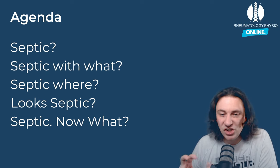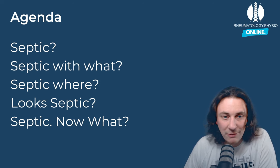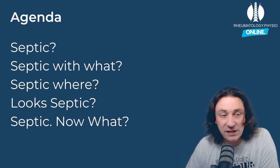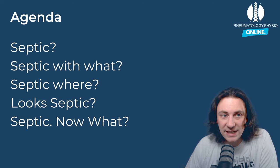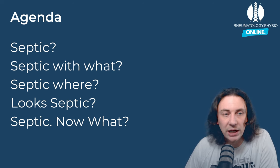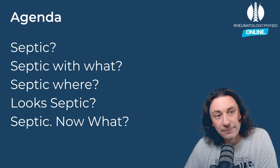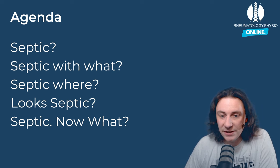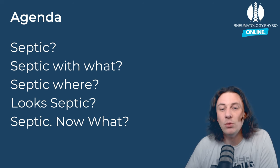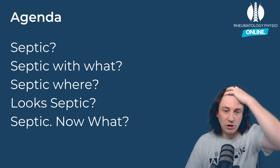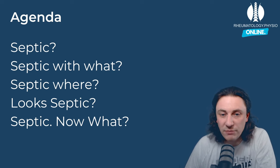So our agenda — we're going to talk about: what is septic arthritis; what are the infections that might occur in joints; where does it look septic; and if you've decided it might be septic, what do we do now? We're going to try and cover all of that in the next 25 minutes to give you a good grounding and understanding about what is happening with a potentially infected joint.